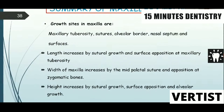In summary, the growth sites in the maxilla are: the maxillary tuberosity, sutures, alveolar border, nasal septum, and surfaces. Maxillary length increases by sutural growth and surface deposition at the maxillary tuberosity. Width increases by the midpalatal suture and deposition at the zygomatic bones. Height increases by sutural growth, surface deposition, and alveolar growth.